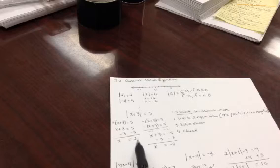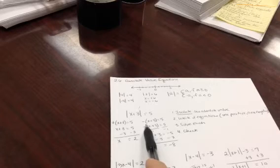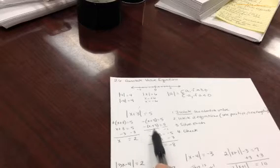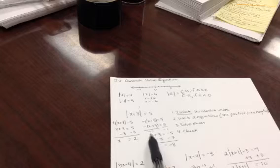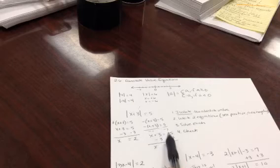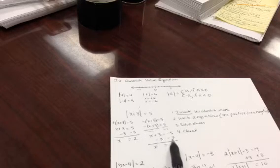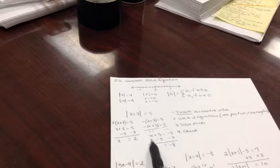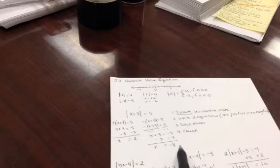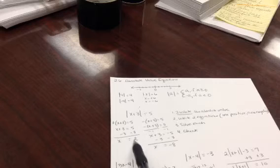For the positive equation, subtract three from both sides to get x equals two. For the negative case, divide both sides by negative one so we have x plus three equals negative five, then subtract three from both sides to get x equals negative eight.